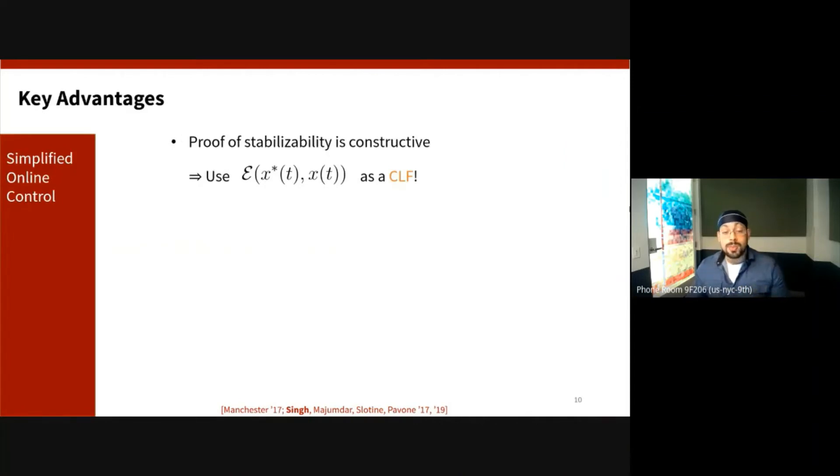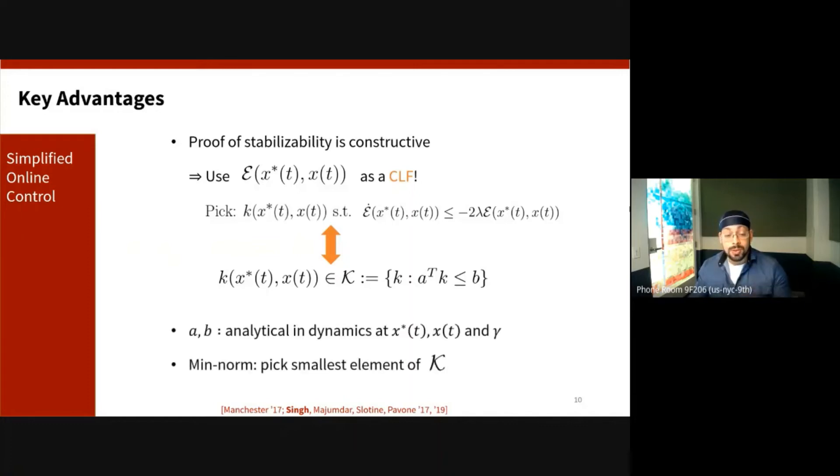The first benefit is that this proof is constructive, which means that we can use the Riemannian energy as a control Lyapunov function. So we can simply look for any feedback control K that guarantees that this stability property holds, and the set of all K that ensures this will always be non-empty. For instance, you can simply pick the smallest element.